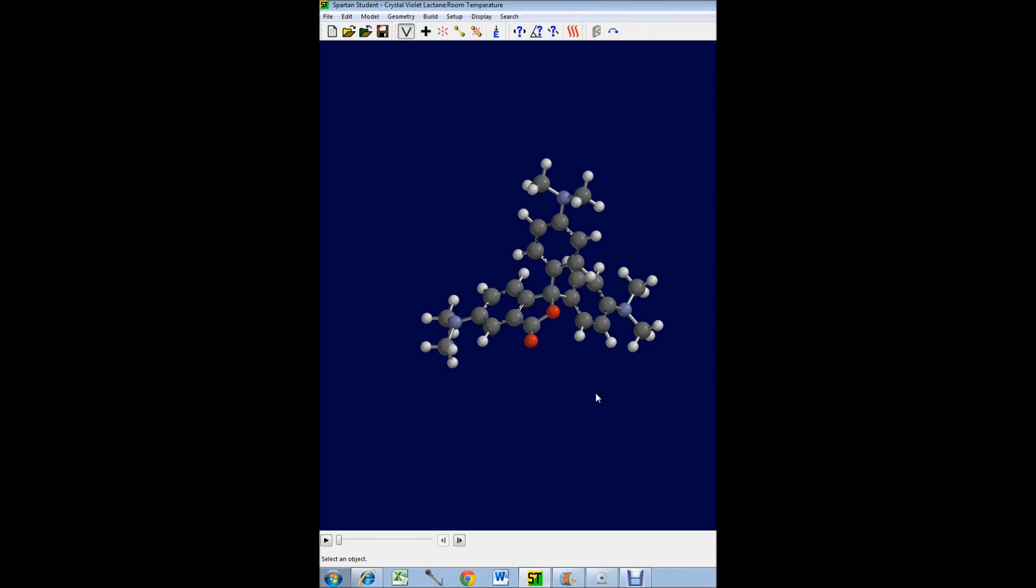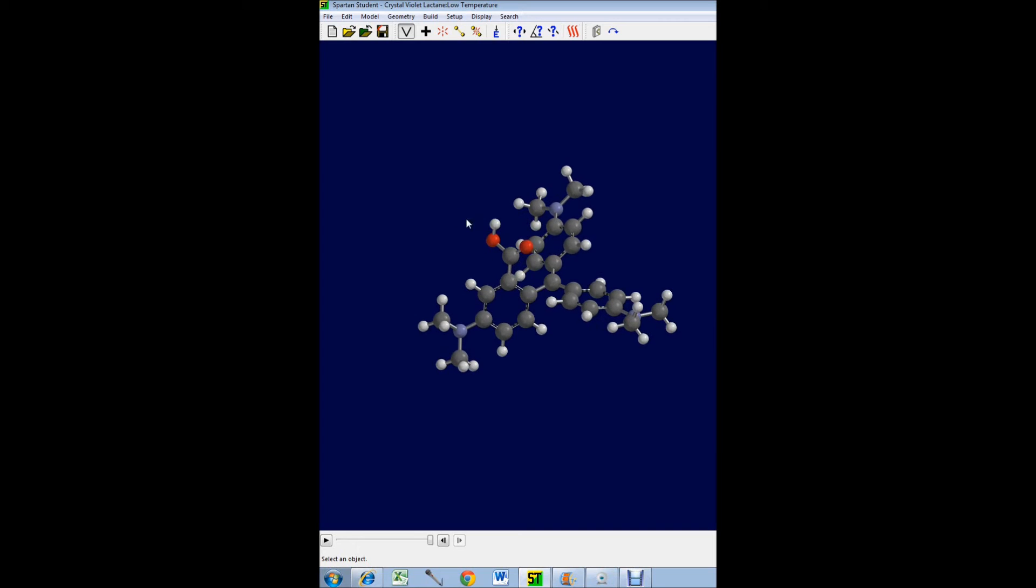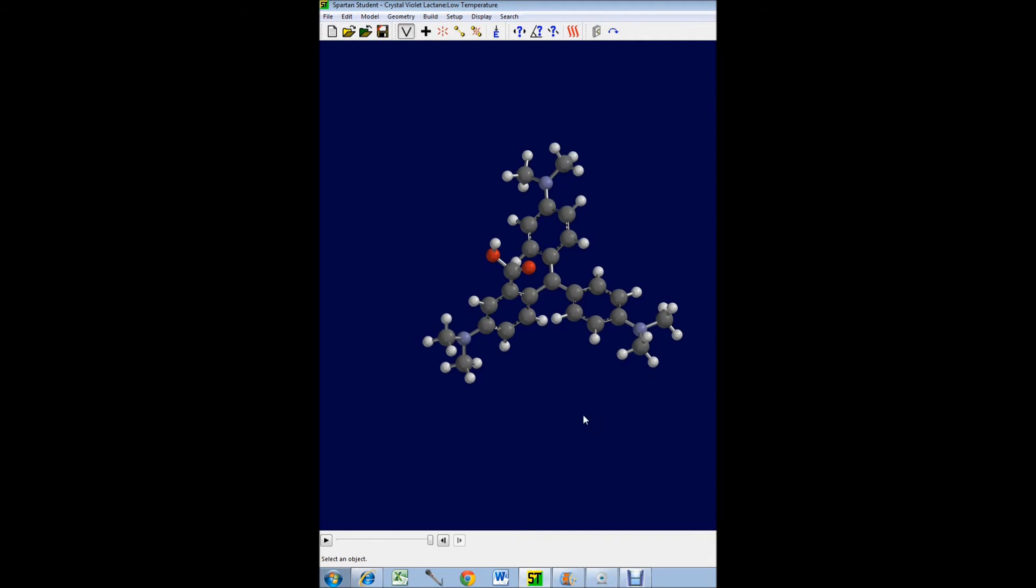But if the temperature is dropped and there's some acidification we get a new form of the molecule. So there's a protonation of this oxygen and there's no bond from the oxygen to the central carbon. And as a result the three rings interact more and the change in the electronic structure of the molecule causes a color change and it's in this low temperature form it's kind of a bluish color.